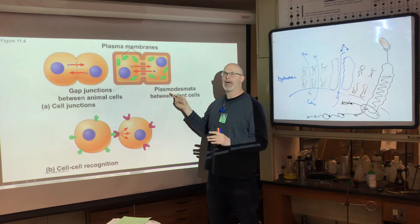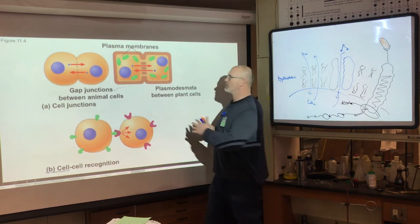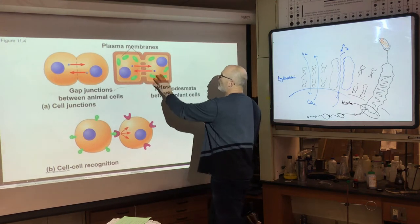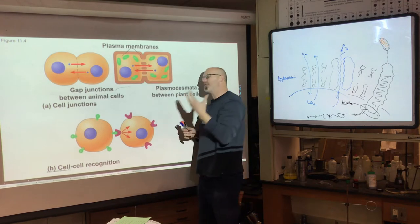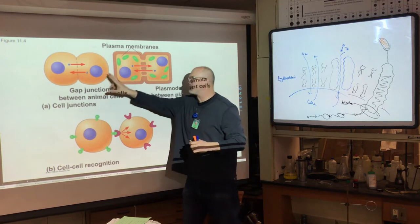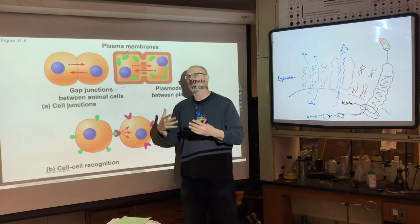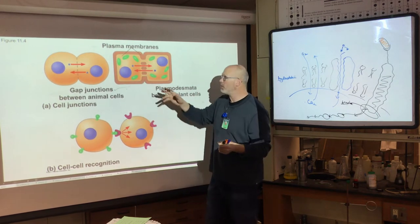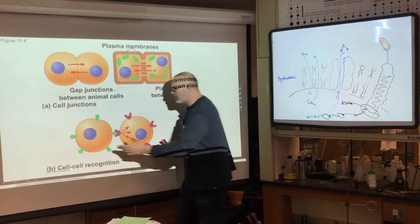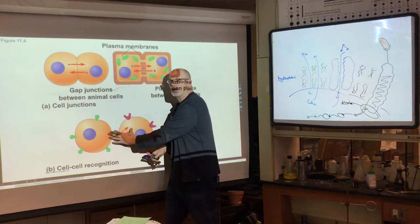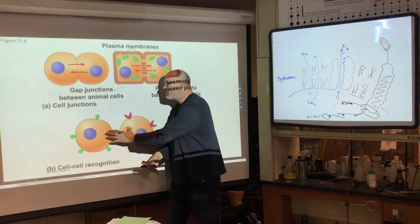Plasmodesmata — say it: plasmodesmata — are gaps that allow plant cells, which lack a circulatory system like animal cells, to have connections for hormones and water to pass through. Cell-to-cell recognition is also how white blood cells recognize whether they have an antigen — that's the immunity part we'll discuss next.